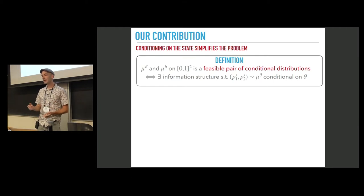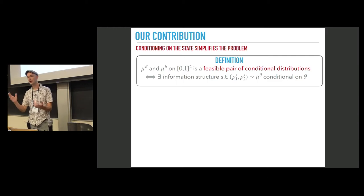We call a pair of distributions mu L and mu H, these are distributions on the unit square, a feasible pair of conditional distributions if there exists an information structure such that the pair of beliefs is distributed according to mu L, conditional on the low state, and it is distributed according to mu H, conditional on the high state.